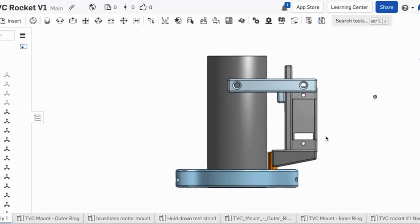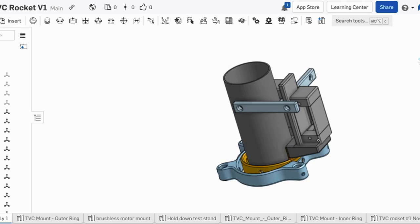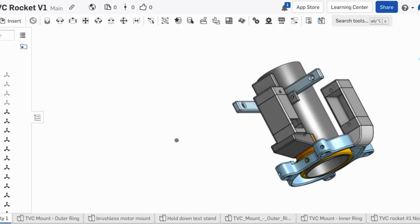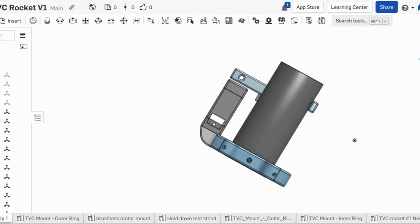Let's start from the bottom of the rocket and work our way up. At the very bottom, we have the thrust vector control mount. This is the device that points the motor in different directions to create thrust vectors for the rocket and keep it upright.